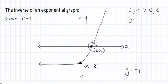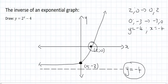0, minus 3 is going to become minus 3, 0. And then you have to switch this as well. So that was y equals to minus 4. Now it just becomes x equals to minus 4. And so let's go plot all these points.